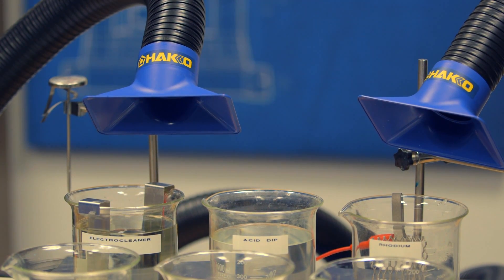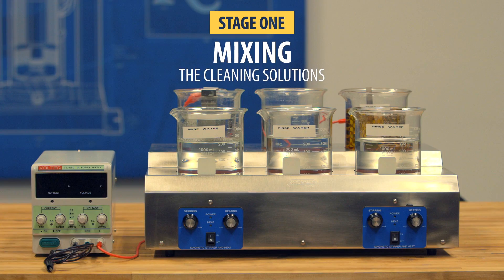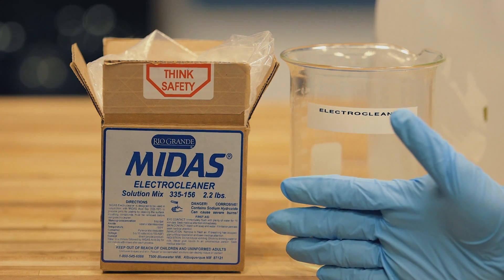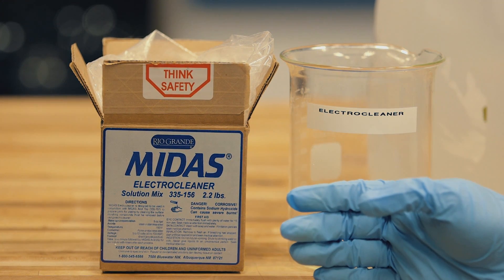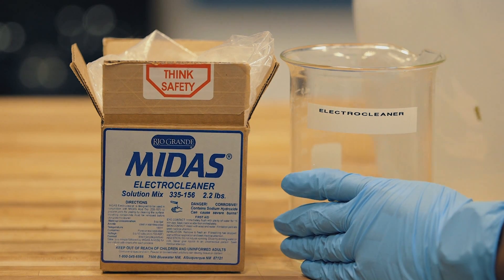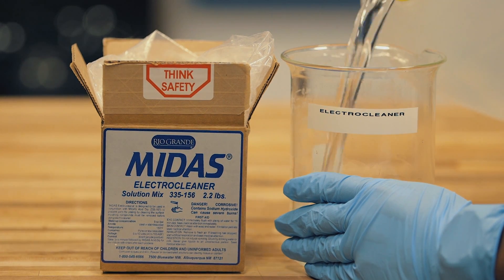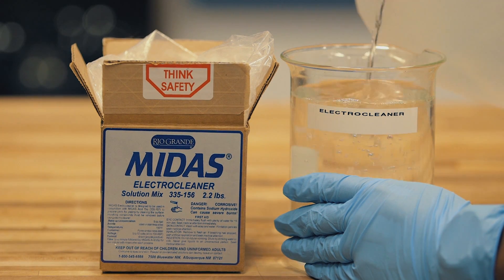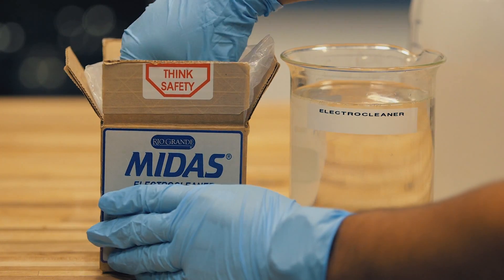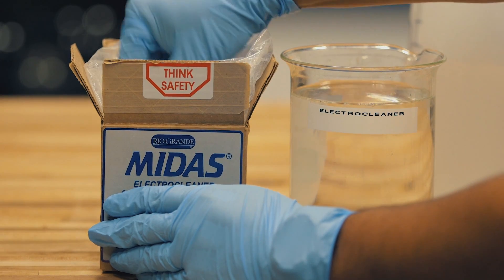Now our first step is to mix the chemicals. We're going to mix our cleaning solutions. Our first solution is an electro cleaner, an alkaline-based degreaser. Follow recommended instructions when mixing the solution. For today's demonstration, we're going to mix one liter of water for two tablespoons of electro cleaner. I'm going to pour in one liter of water and add my pre-measured electro cleaner.